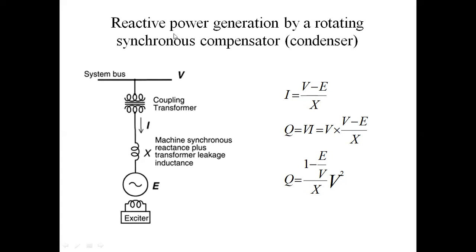This is the conventional synchronous generator or synchronous compensator. Here are the conditions: When E greater than V, this synchronous compensator is generating reactive power — it is sending reactive power. When E less than V, this synchronous compensator is absorbing reactive power. So there are two conditions: sending reactive power when E > V, and absorbing reactive power when E < V.